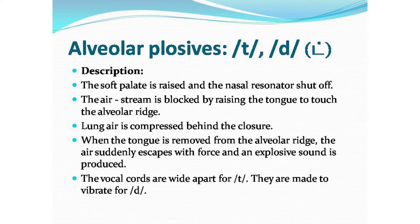Now the next two sounds in plosives are alveolar plosives — T and D. The soft palate is raised and the nasal resonator shuts off. The air stream is blocked by raising the tongue to touch the alveolar ridge. Lung air is compressed behind this closure. When the tongue is removed from the alveolar ridge, the air suddenly escapes with force and an explosive sound is produced.